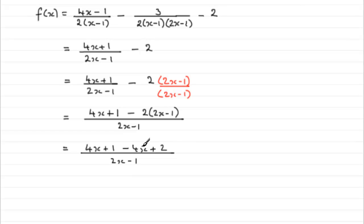So, 4x minus 4x, that's gone. 1 plus 2 is 3. So, you can see that we end up, then, with 3 over 2x minus 1. Okay.